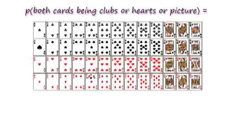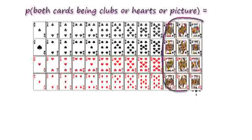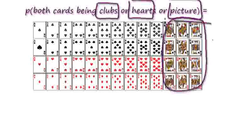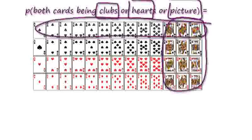Let's draw the Venn diagram for this. We've got three parts and they're all "or"s — clubs will be all these here, hearts will be all these here. You can see there's an overlap here, so let's draw a Venn diagram.